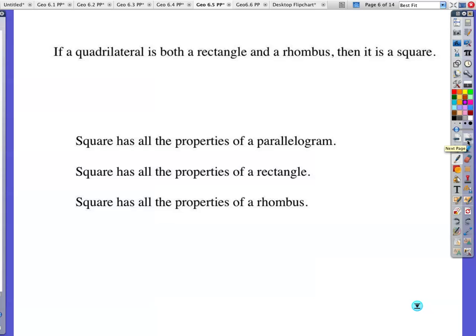And this you are going to have to write down, if a quadrilateral is both a rectangle and a rhombus, then it is a square. So it's got, a square is like a special case of a rectangle in a rhombus. A square has all the properties of a parallelogram. A square has all the properties of a rectangle. And a square has all the properties of a rhombus. So everything applies to a square.